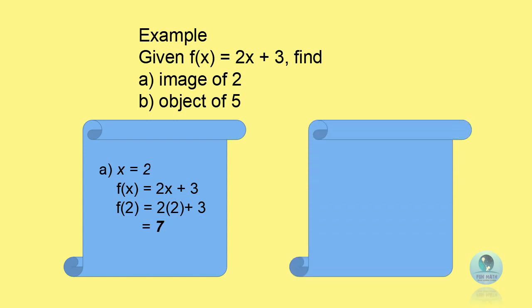The second question: find the object of 5. You need to find the object, so 5 is your image. Therefore, f(x) equals to 5. 2x plus 3 equals to 5. And you get the answer x equals to 1.